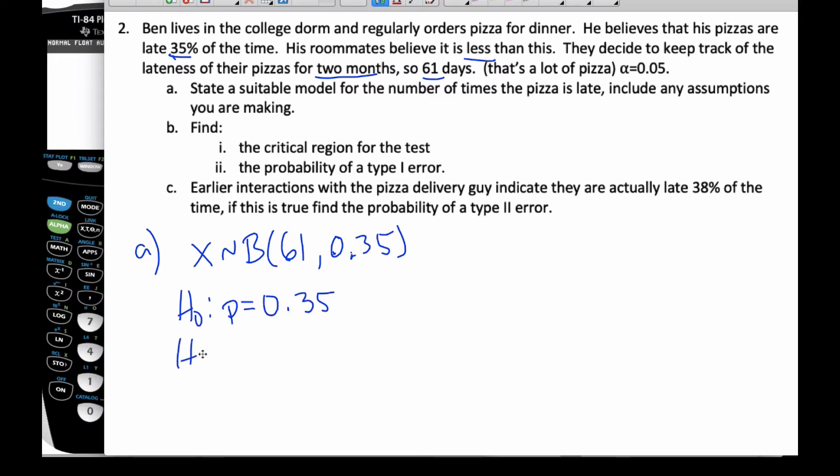And the alternative is going to be, because we're looking for less than this, they believe it's less than 0.35. We know each day, or we have to assume each day the pizzas come, it's independent of the previous days. It's either late or it's not late, and there's a fixed number of trials of 61. And so, here are our hypotheses.